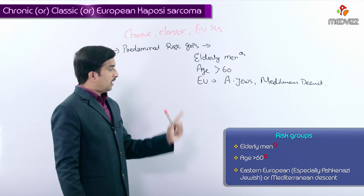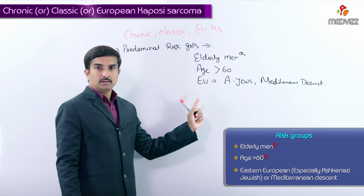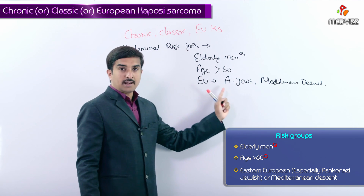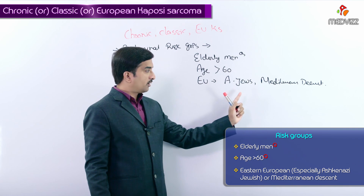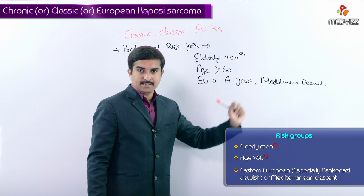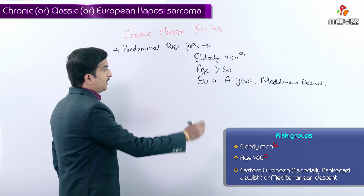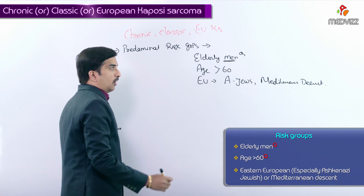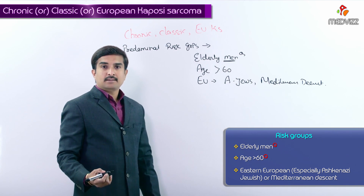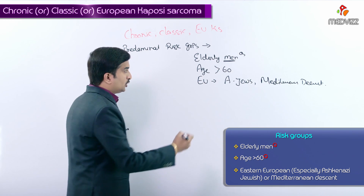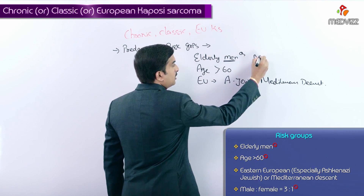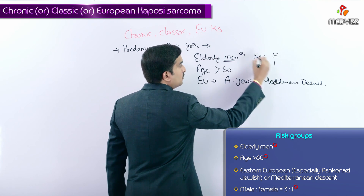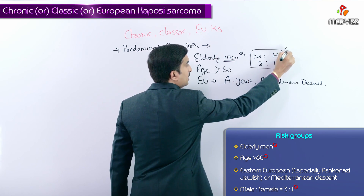It is more commonly seen in elderly men, age greater than 60 years, of European origin, especially Ashkenazi Jews or Mediterranean descent. It has a male predominance, with a male-to-female ratio of 3 to 1.